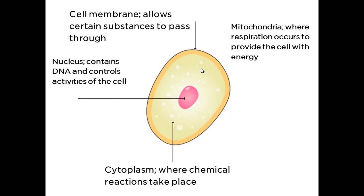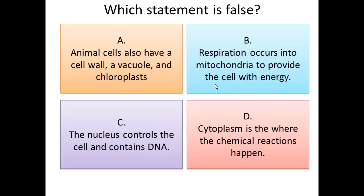Respiration is the process that allows the cell to release energy, and this energy is used for every single chemical reaction that happens in the cell. Now that we've revised the animal cell characteristics, let's have a look at this question. As usual, you need to read the full possibilities, pick one, and take your time to read and choose. Pause the video.